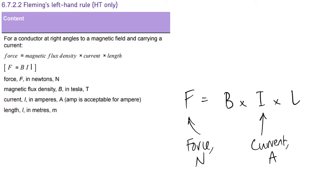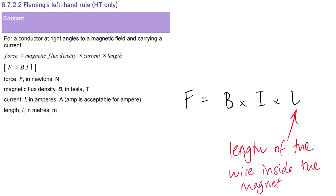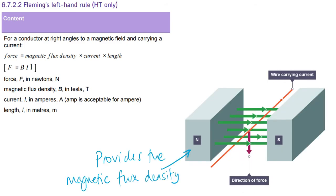But less certain maybe about B and L. B is our magnetic flux density, and that's measured in Tesla, capital T. And that represents the strength, how strong the magnetic field is. So the stronger the magnet, the bigger the magnetic flux density. Now L represents the length of the wire inside a magnet.